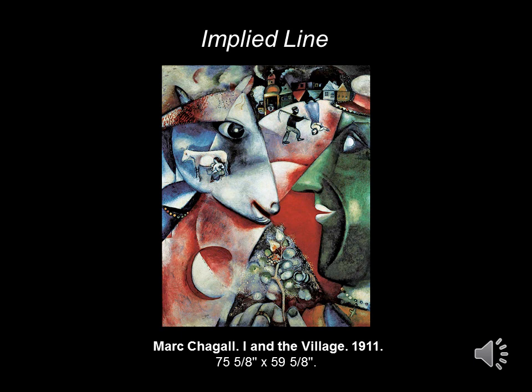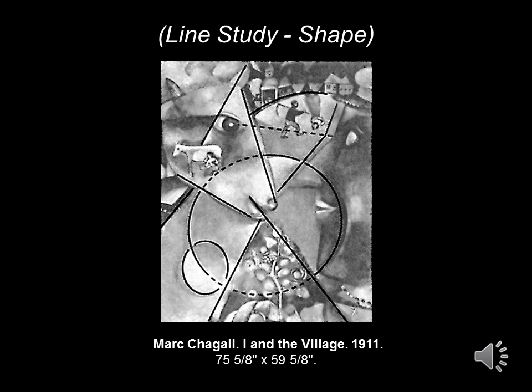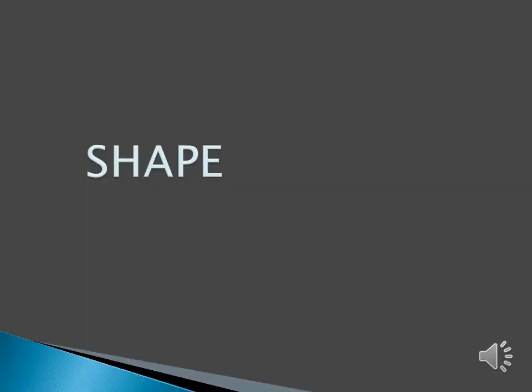Here we have a transitional image that will lead us into our next element, that is shape. In Eye in the Village from Marc Chagall, he used implied line to define geometric shapes. The shapes are pretty easy to recognize, but we're going to look at a line study next to break it down. When we look at this line study of Eye in the Village, we can see the hidden geometry underneath the painting. This is a common element in many of Chagall's works.